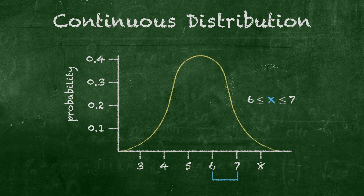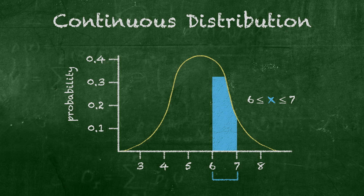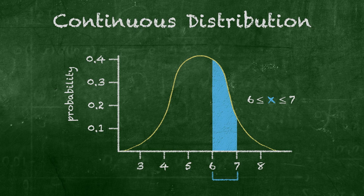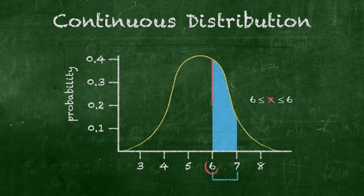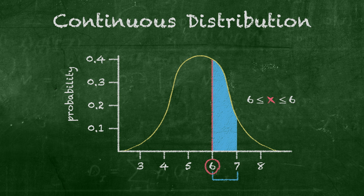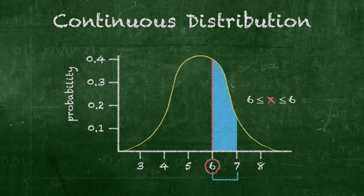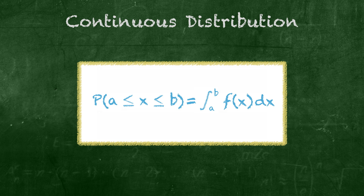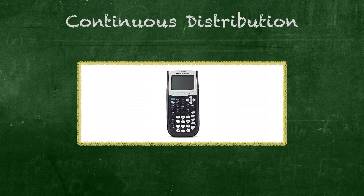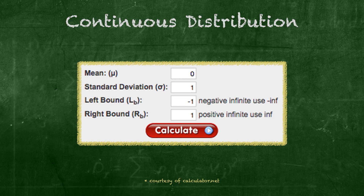This range gives us the ability to calculate any area under the curve, and that area gives us the probability of the range occurring. If we try to find the probability of an exact value, like 6, that would be 0, because the area of a straight line is 0. We can use formulas, built-in technology on calculators, or online resources to calculate the probabilities of continuous ranges. But what's important here is being able to differentiate between continuous and discrete variables and their graphical distributions.